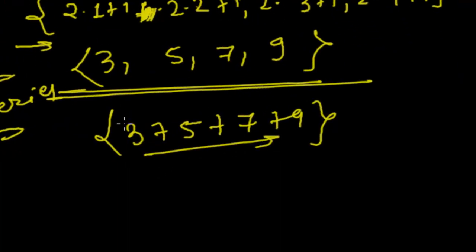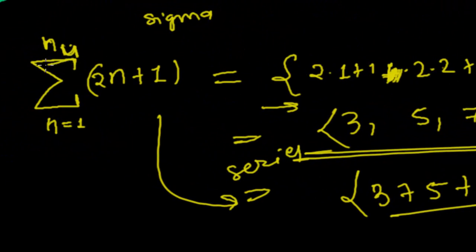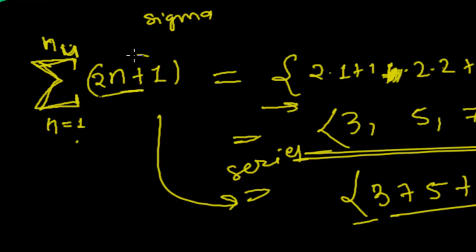So this is a series of numbers from 3 to 9, where n starts from 1 and goes to 4, and n represents natural numbers. This is the sequence, and now this is the series: 3 + 5 + 7 + 9.